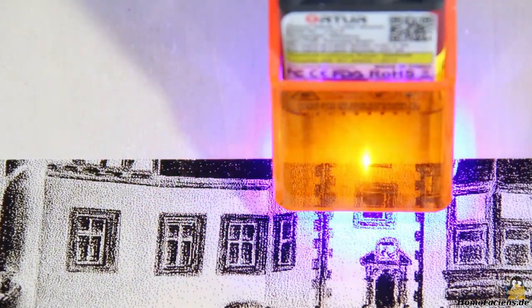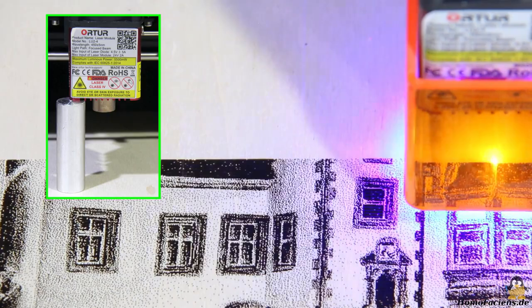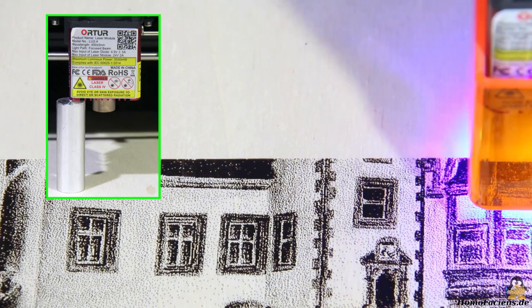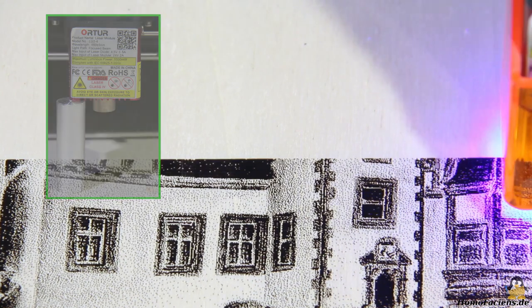The laser head has a fixed focus, the height of the unit has to be adjusted for focusing. The focusing tool included in the package is a cylindrical spacer that must fit between the workpiece and the lower edge of the laser module.